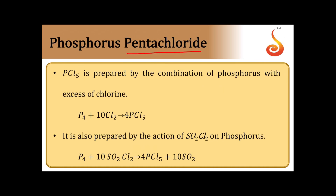Then comes phosphorus pentachloride, PCl5. It is prepared by the same reaction — phosphorus plus chlorine — but chlorine must be in excess, because a limited amount produces PCl3 while an excess amount produces PCl5. One more preparation is by the action of SO2Cl2, called sulfuryl chloride, on phosphorus. So with thionyl chloride (SOCl2) we get PCl3, and with sulfuryl chloride (SO2Cl2) we get PCl5. These are the two preparations of PCl5.